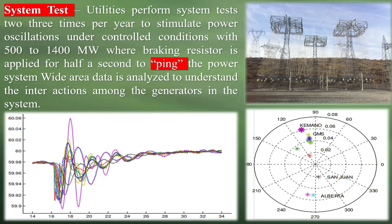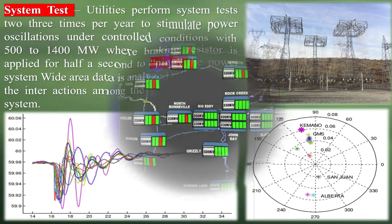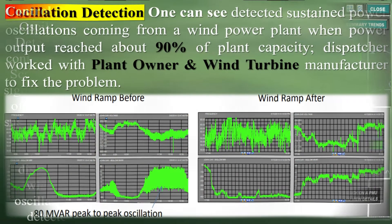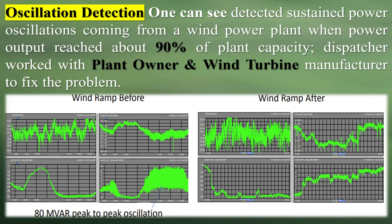The technology is also used to prevent wide-scale cascading outages. Technology is still evolving, and there are existing challenges in its implementation and potential applications. As an example of oscillation detection: sustained power oscillations were detected coming from a wind power plant when power output reached about 90% of plant capacity. The dispatcher worked with the plant owner and wind turbine manufacturer to fix the problem.